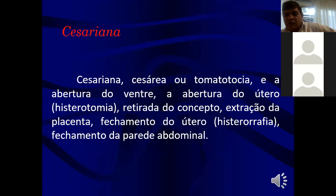Retirada do concepto, extração da placenta, fechamento do útero por histerografia. A abertura é histerotomia — o corte que a gente faz no útero. Quando a gente retira a placenta, a gente vai fechar, fazendo uma histerografia, a sutura do útero. Segundo a literatura, tolera-se pontos em chuleio cruzado, mas o ideal é que se faça em pontos separados. A grande maioria dos colegas hoje fazem um chuleio contínuo. Posteriormente, aproxima-se o peritônio visceral.